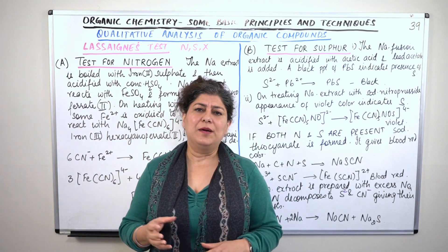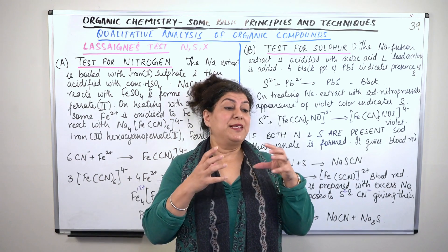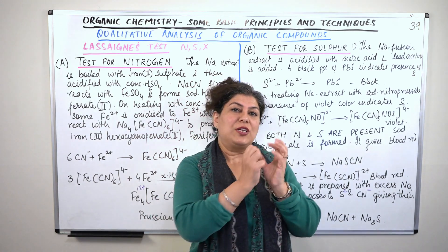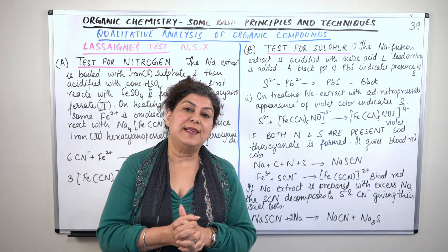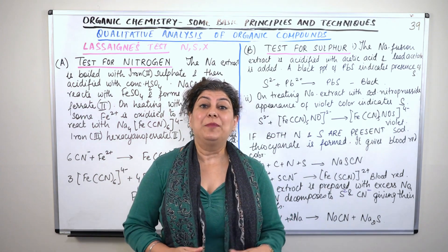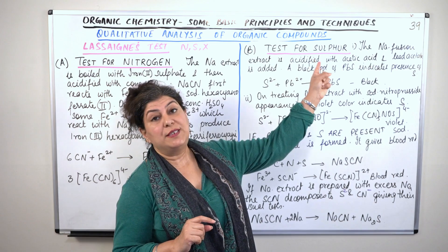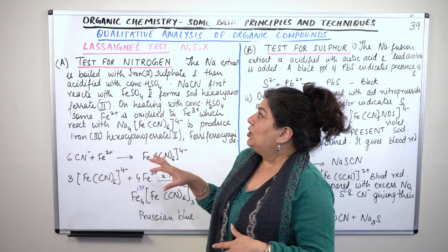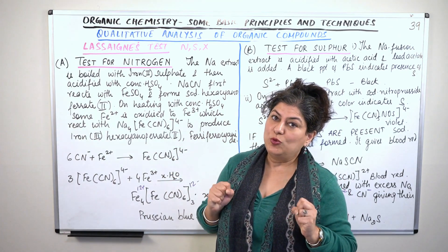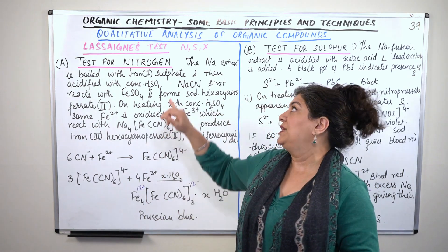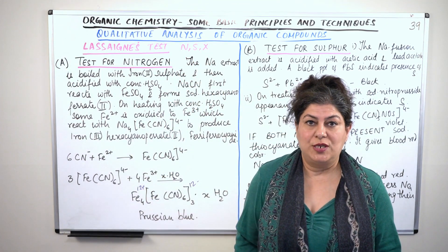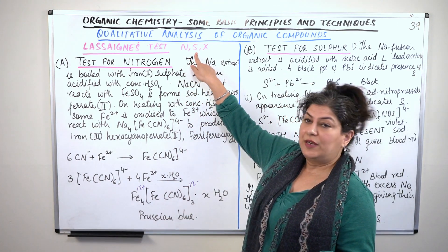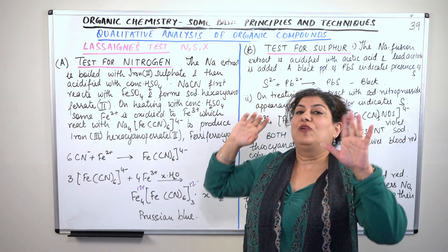We use sodium, which is one of the most reactive metals. This is why we make sodium extract — so that it will convert to a strong ionic form. Once we get the Lassaigne's extract, we identify which elements are present: nitrogen, sulfur, and halogens. We can identify them with the sodium extract. In this video, I will cover nitrogen and sulfur. In the next video, we will identify halogens and phosphorus.